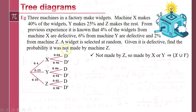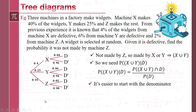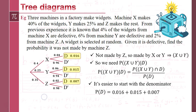The question asks: given a widget is defective, find the probability it was not made by machine Z. Not made by Z means it came from X or Y. So we need P(X ∪ Y | defective). Using the formula, we have P((X ∪ Y) ∩ defective) over P(defective). Let's work out the denominator first — we're interested in the proportion of items that are defective. Looking at the three defective branches on the tree and multiplying along them, we add the three values to get P(defective) = 0.038.